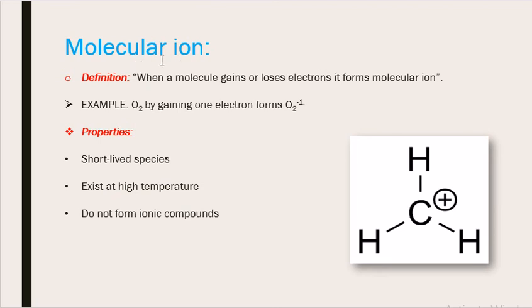Molecular ion: When a molecule gains or loses electrons it forms molecular ion. Molecular ion is formed when a molecule made up of atoms combined together will gain or lose electrons. For example, when an oxygen molecule O2 gains one electron, it forms O2-1. By gaining one electron it gets the charge negative 1. O2-1 is the molecular ion formed by oxygen molecule.